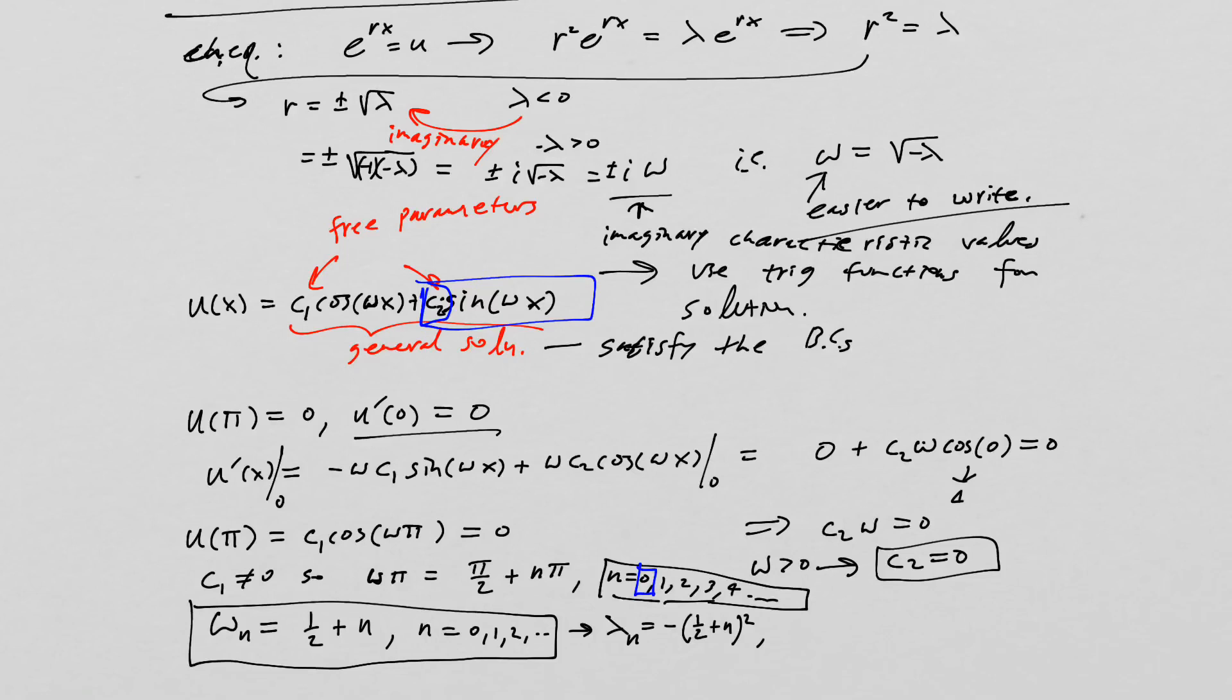And we have our eigenfunction u n's. They're going to be equal to, well, again, we had them right there. It's that cosine. It's going to be cosine of one half plus n times x. And that's going to be for n equals zero, one, two, three, four, and so on. So right there, that's a perfect answer. And it's really important that we also write all the n values there.